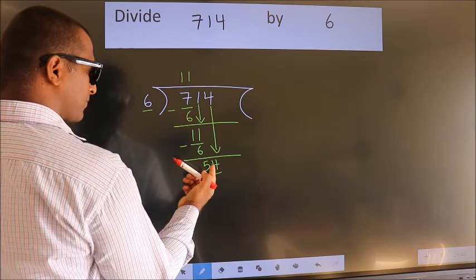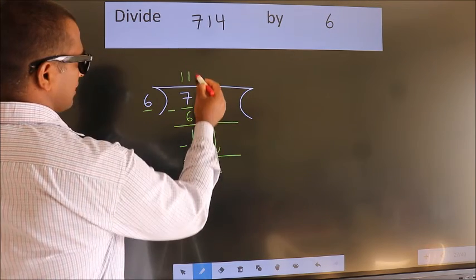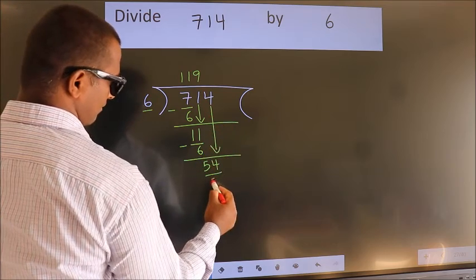So 4 down. So 54. When do we get 54? In 6 table. 6 nines, 54.